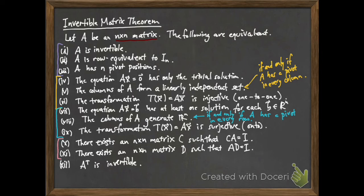The next two statements appear strictly weaker than statement one. When A is invertible, by definition there is a single matrix that works as both a simultaneous left and right inverse. Statement ten says that if you can find a left inverse, that's enough — the matrix will be invertible. Statement eleven being equivalent to one says that if you can find a right inverse, that's enough and the matrix will be invertible.